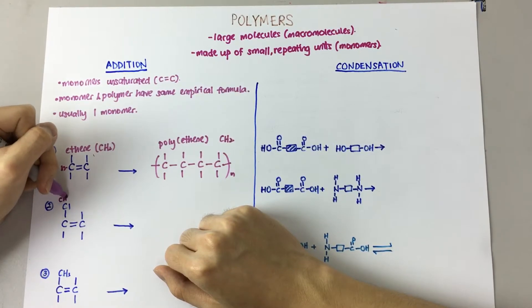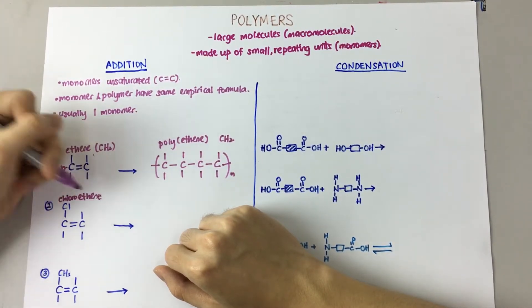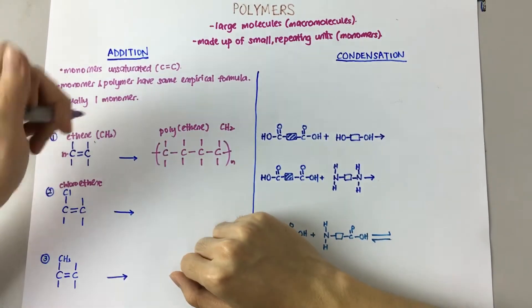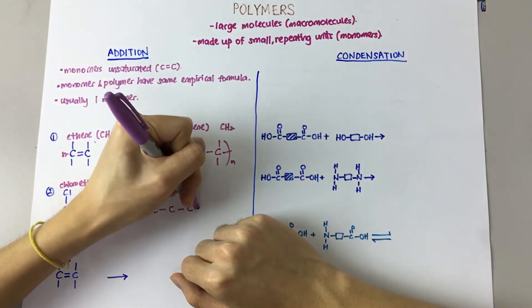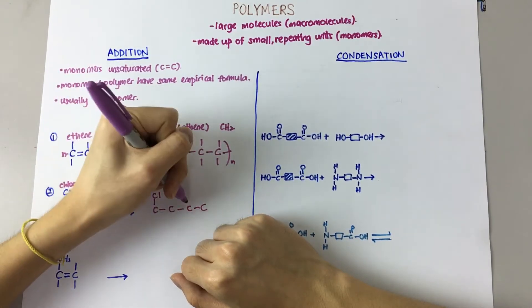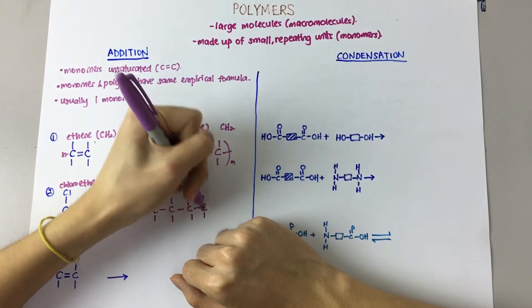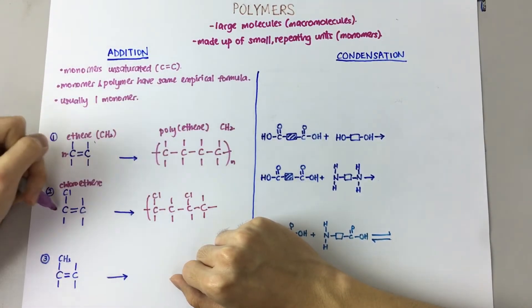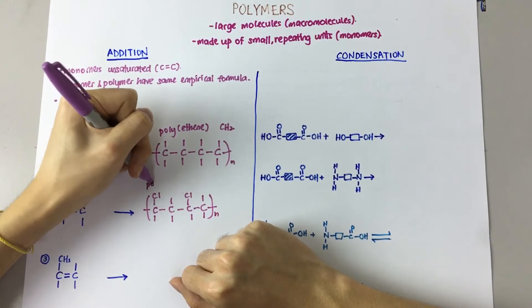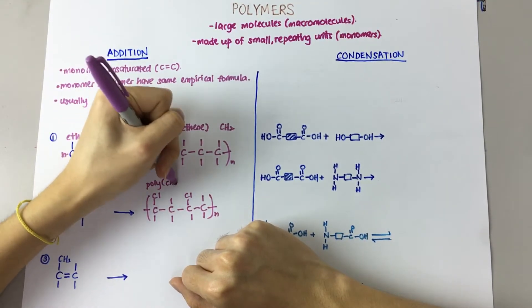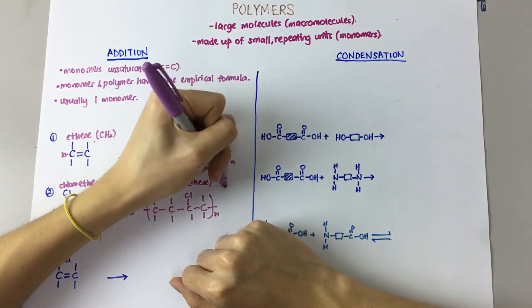Now, the next one is chloroethene. When it becomes a polymer, it looks something like this. We call it polychloroethene or PVC.